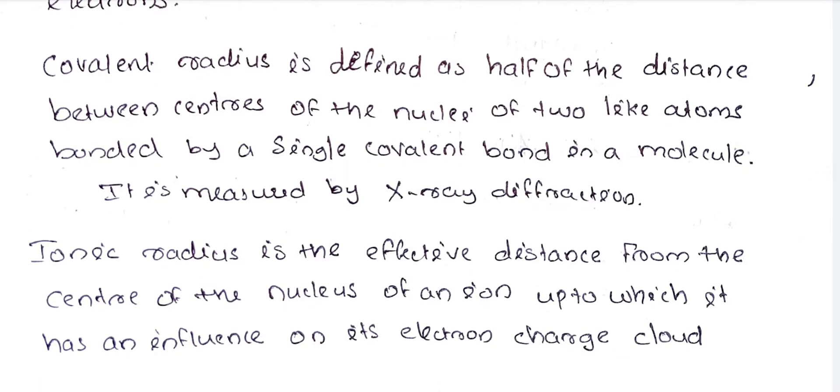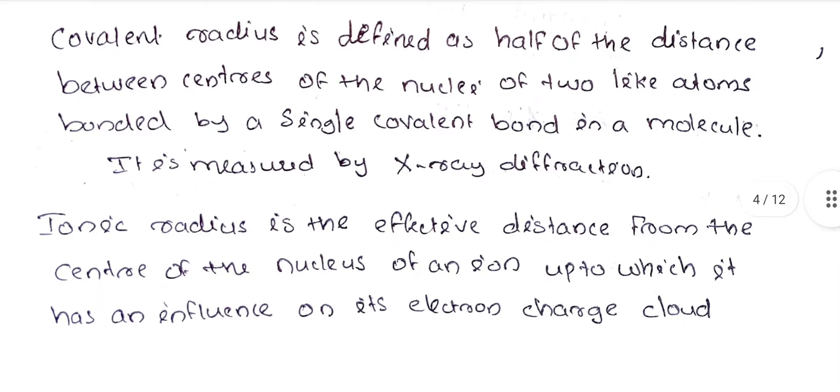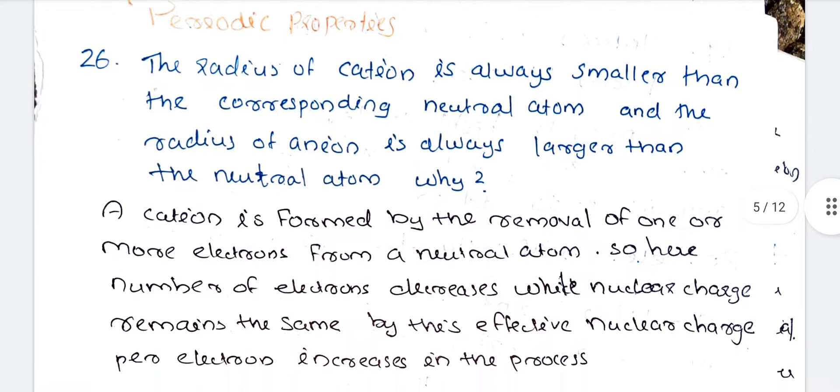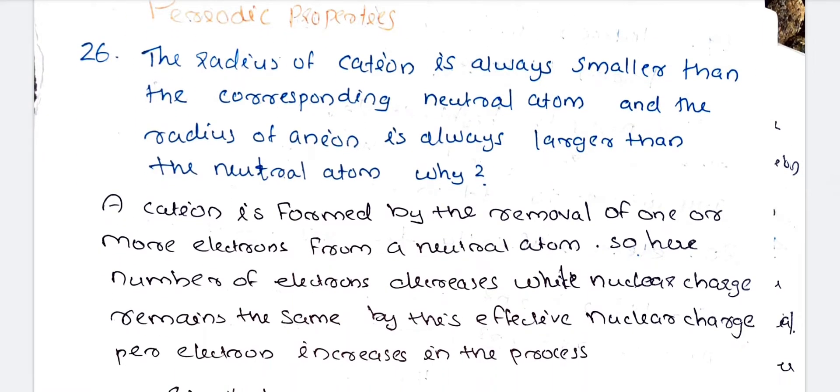The ionic radius is the effective distance from the center of the nucleus of an ion, up to which it has an influence on its electron charge cloud. This is what we call the ionic radius.